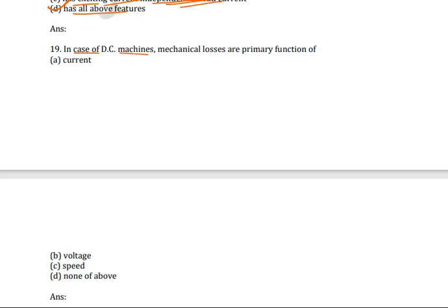Next question: in a DC machine, mechanical losses are primarily a function of what? Mechanical losses occur due to friction between stationary and rotating parts. The correct answer is speed. Mechanical losses usually occur due to bearings, brushes, and windage losses.